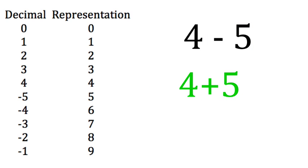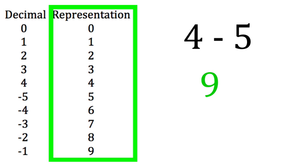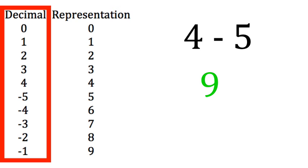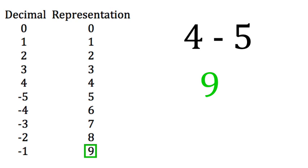So then we do 4 plus 5, which equals 9. Then we convert backwards from the representation to the decimal. And as we can see, 9 is equal to minus 1.